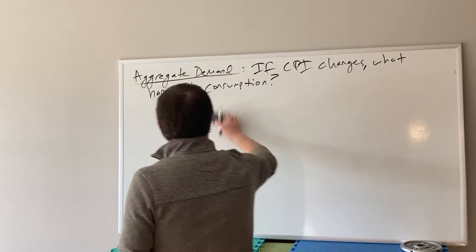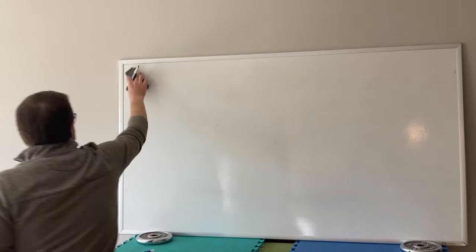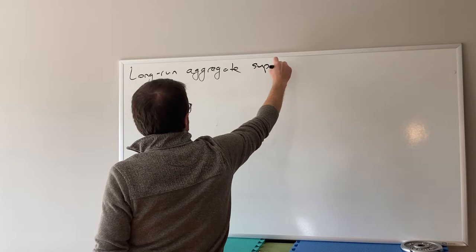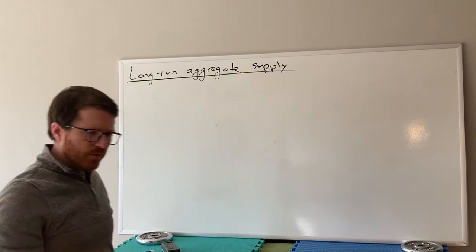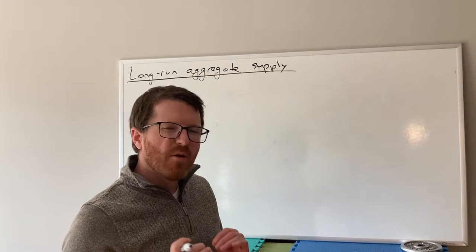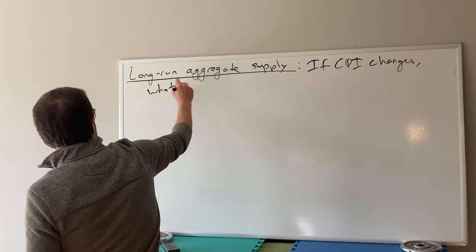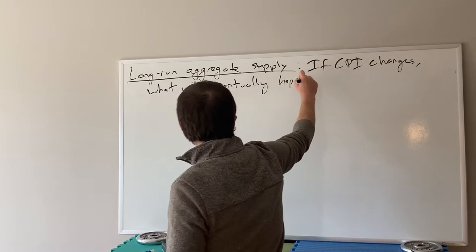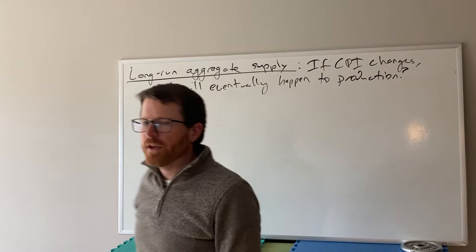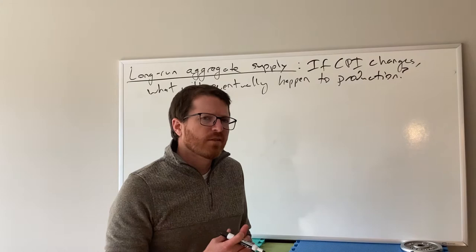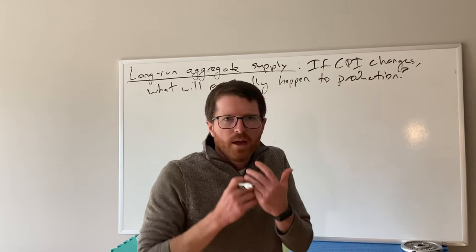Long-run aggregate supply is still thinking about the same parameters — CPI and real GDP — but now we're asking a slightly different question: if CPI changes, what will eventually happen to production? This is a complicated thing. It's very complicated if you've never seen it before, but when you're an economics major, it eventually becomes second nature. The key idea is that when anything happens, there are potentially two effects: a short-run effect and a long-run effect.